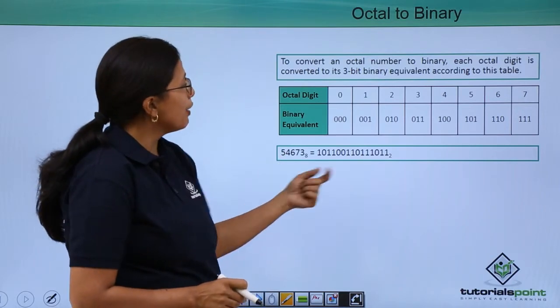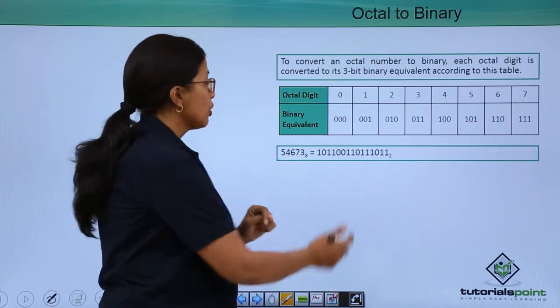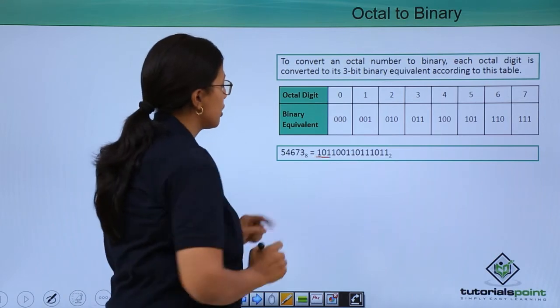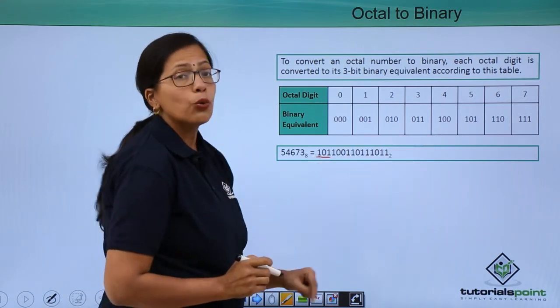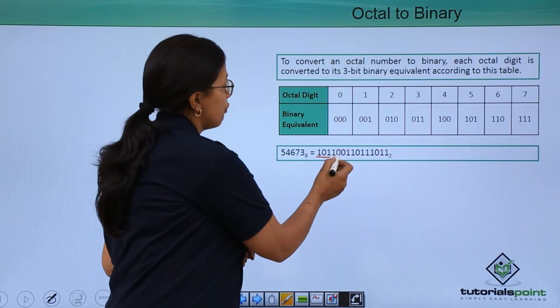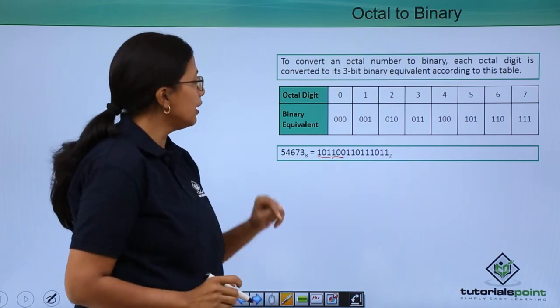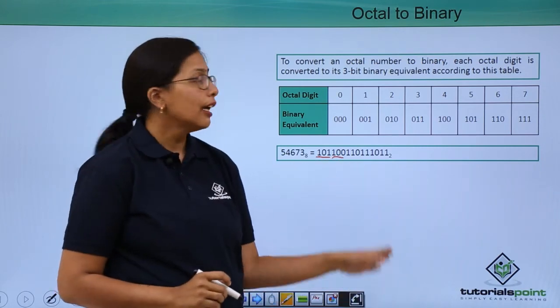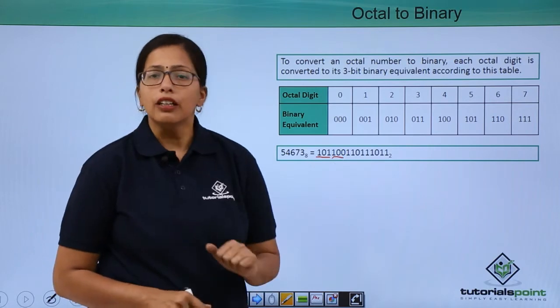What is 5? 5, I can see here is 101. So, I will write 101 first. 4 is equivalent to 100. So, I have 100 here. Similarly, I will proceed till 3 and I will get this binary number.